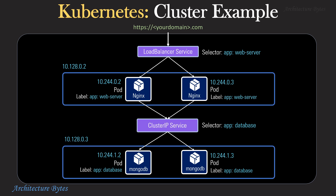Here is an example of a Kubernetes cluster with multiple services. The LoadBalancer service sends requests to pods running an Nginx web server, selecting these pods based on selector app colon web server. When the Nginx web server needs to connect to MongoDB instances running in pods, it makes use of a ClusterIP service. The ClusterIP service provides a static IP address and forwards traffic to MongoDB pods based on selector app colon database. Since the pods are ephemeral and can be replaced, these services provide a static IP address to reach the underlying pods.